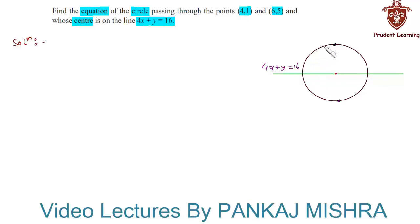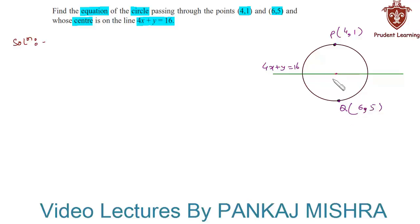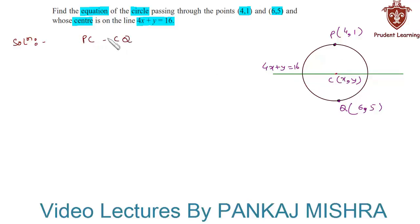Let us assume one point P having coordinates (4,1) and the other point Q having coordinates (6,5). Also let us assume that the coordinates of center C are (x, y). Now we know that distance PC must be equal to distance CQ, since both are radii of the circle. So we can say that PC equals CQ.